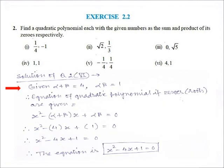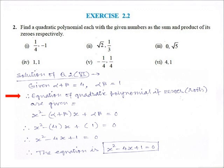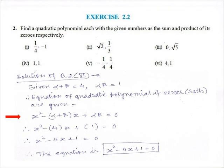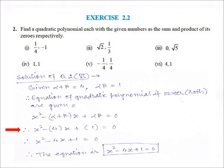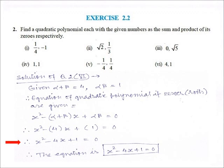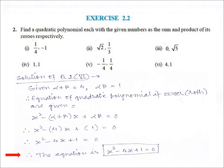Sixth part: given alpha plus beta is equal to 4 and alpha·beta is equal to 1. Therefore, the equation of the quadratic polynomial, if zeros (roots) are given, is x² minus (alpha plus beta)x plus alpha·beta is equal to 0. Putting the values of alpha plus beta and alpha·beta, we get x² minus 4x plus 1 is equal to 0. Therefore, the equation is x² minus 4x plus 1 is equal to 0.